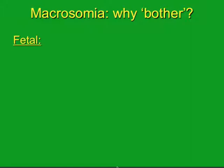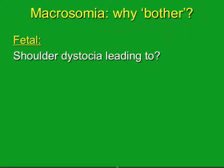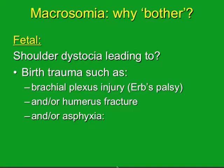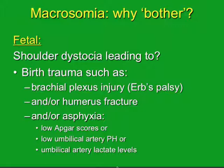For the fetus, the main complication is shoulder dystocia, which leads to increased risk of birth trauma such as brachial plexus injury — Erb's palsy — sometimes combined with fracture of the humerus, and fetal asphyxia. Asphyxia is defined by low APGAR scores or, if available, low umbilical artery and vein pH and high umbilical artery and vein lactate levels.